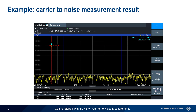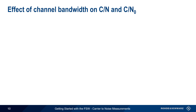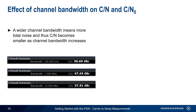Now let's look at an example Carrier-to-Noise measurement result. At the top of the default display, we see the graphical or spectrum view. Note that the FXD marker has been automatically placed on the carrier. The configured channel bandwidth is indicated by a pair of blue vertical lines. At the bottom of the screen, numerical results are given for both the marker values as well as the channel bandwidth and carrier-to-noise ratio. It's worth noting that varying the channel bandwidth will affect the results; the Carrier-to-Noise ratio will decrease as channel bandwidth increases.